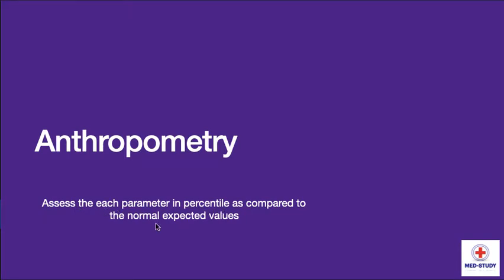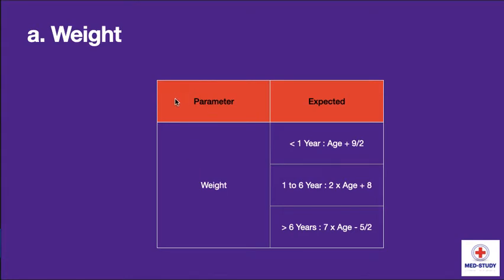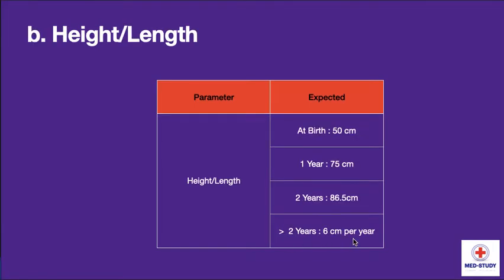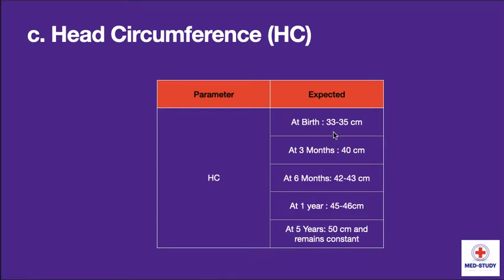The first parameter is weight. Expected weight for less than 1 year is: age plus 9, divided by 2. From 1 to 6 years it is: 2 into age plus 8. For more than 6 years it is: 7 into age minus 5, divided by 2. Now going to the second parameter, height or length. At birth it is 50 centimeters, at 1 year it is 75 centimeters, at 2 years it is 86.5 centimeters, and from more than 2 years it increases 6 centimeters per year.